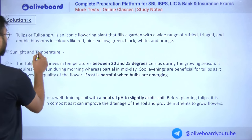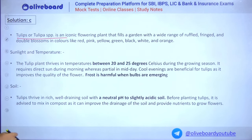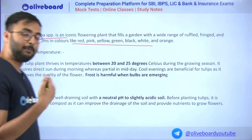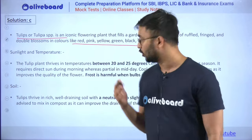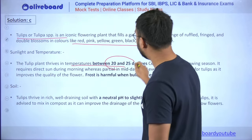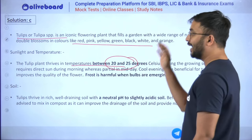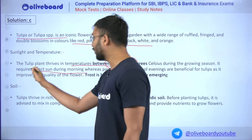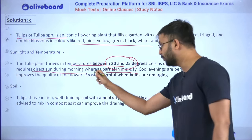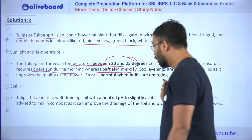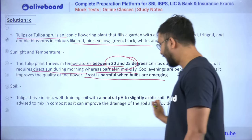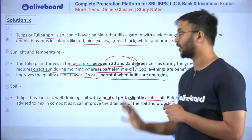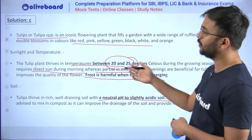Scientific name of tulip is Tulipa specialis. Colors include red, pink, yellow, green, black, white, and orange — not only pink. Temperature requirement is 20–25°C. In the morning, direct sun is required; in midday/afternoon, only partial sun. Frost is harmful for this flower. Neutral to slightly acidic pH soil is preferable.